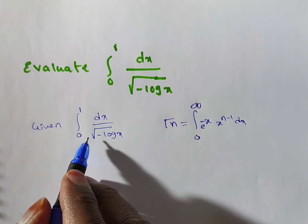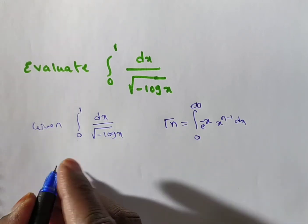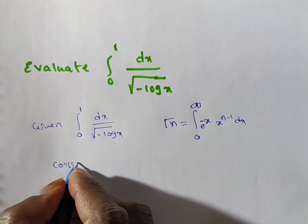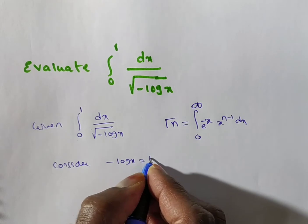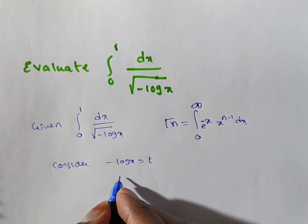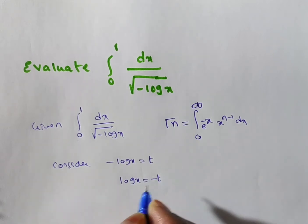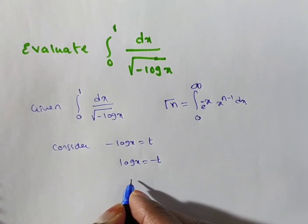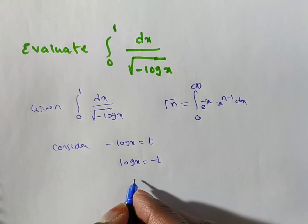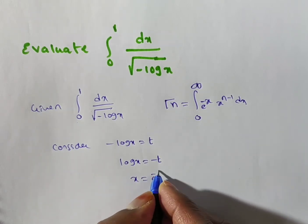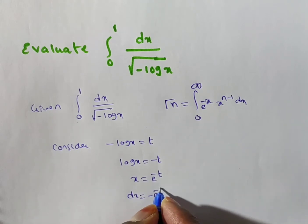Here, do you see any e to the power x terms? No, there are none. So in this case, we consider minus log x equal to t. That implies log x equals minus t. Taking the anti-log (exponential) on both sides, we get x equals e to the power of minus t. Then dx equals minus e to the power of minus t, dt.